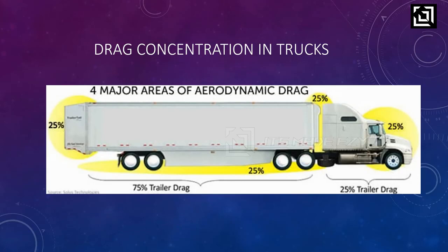The first area is around the front side of the vehicle, which accounts for around 20 to 25% of drag. The second area is the back side of the truck, which accounts for around 45% of drag. By using deflectors on the truck, we can reduce this drag.